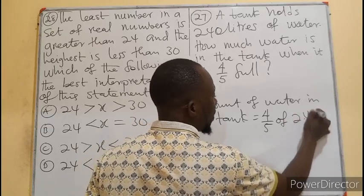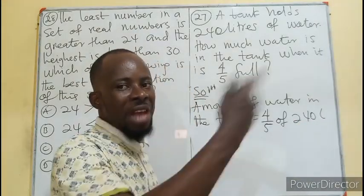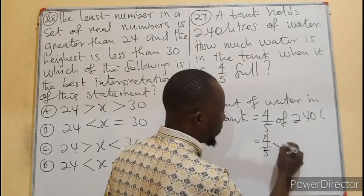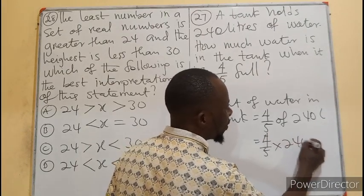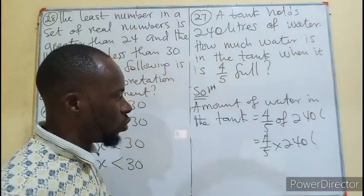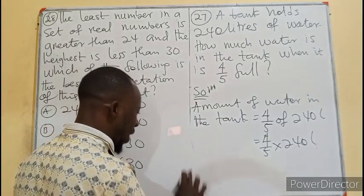4/5 means 4 over 5 times 240 liters. How do we do this cancellation? Because of the zero at the back, 5 can divide.